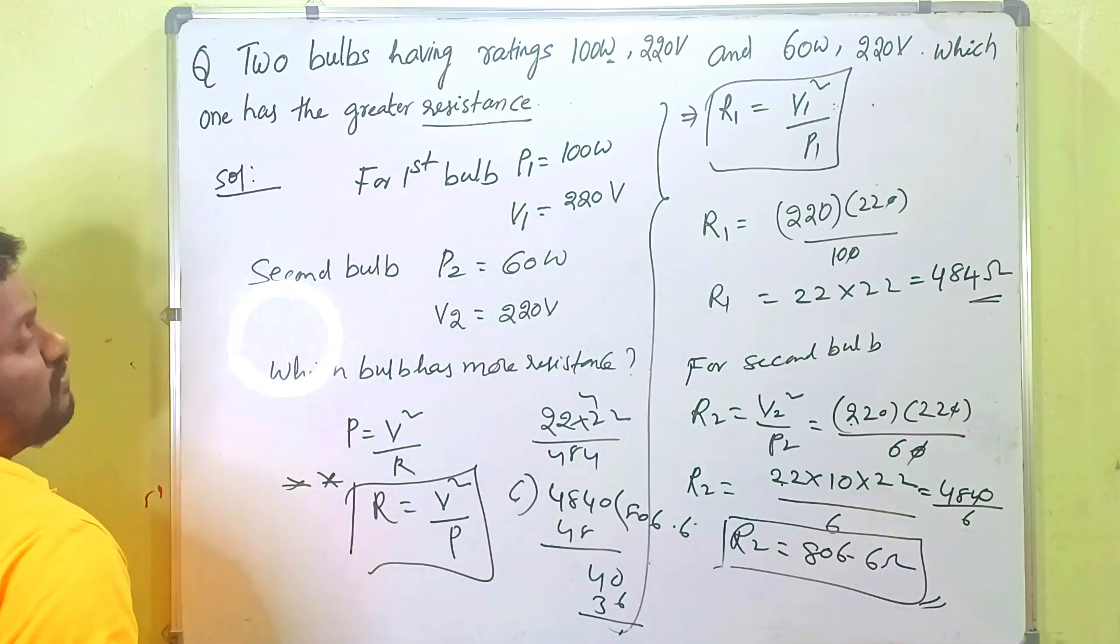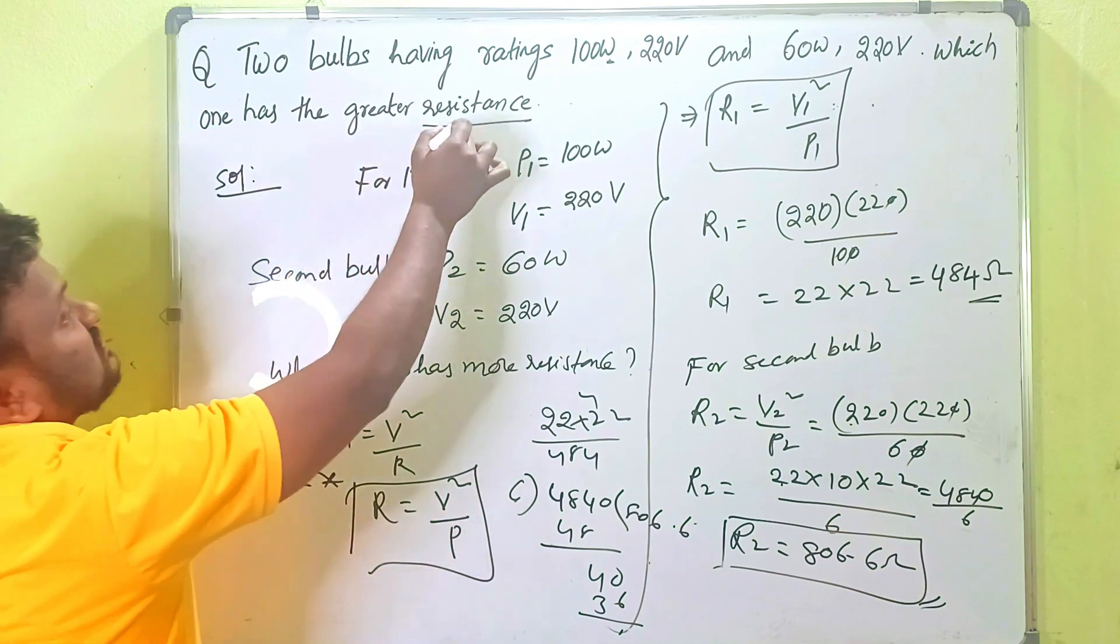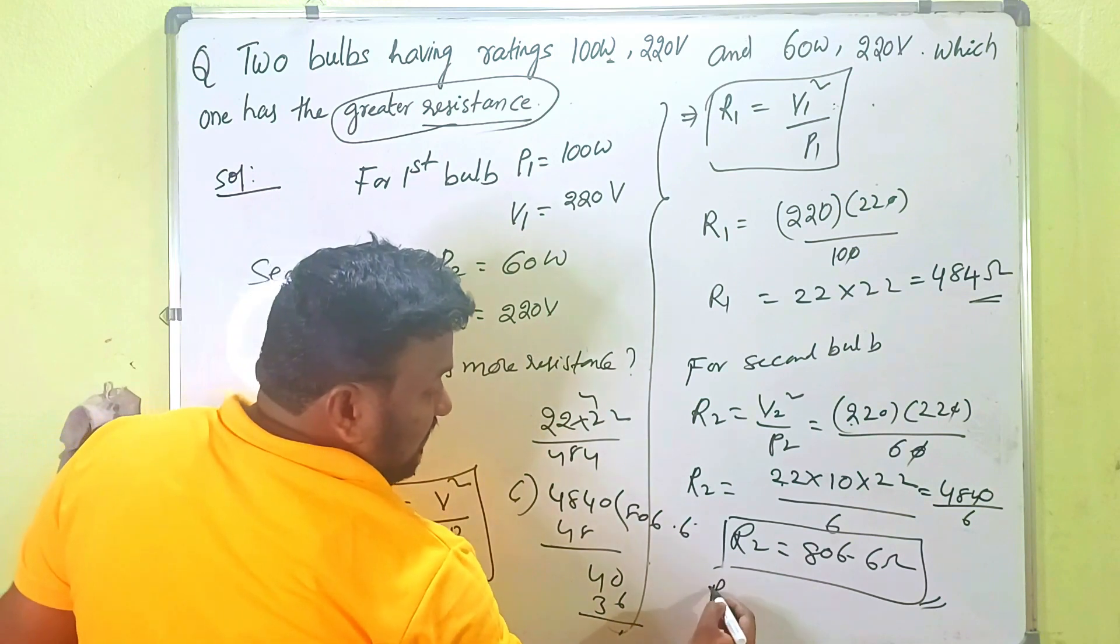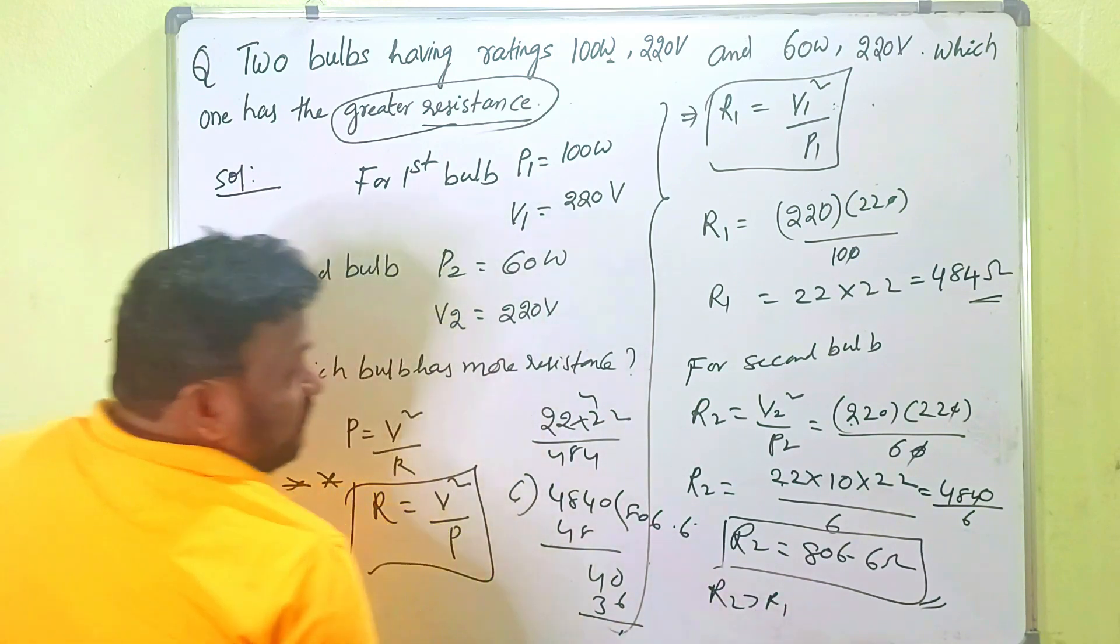That's why here, the second bulb, the second bulb has more resistance. Therefore, second bulb has more resistance. R2 is greater than R1. So children, without doing that problem solution, we can easily say the answer. How is it possible? Let's see here.